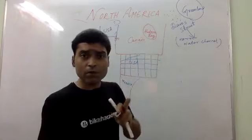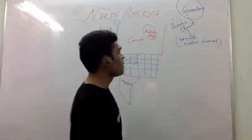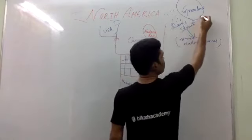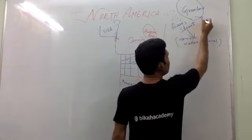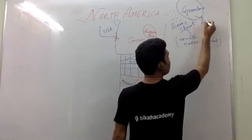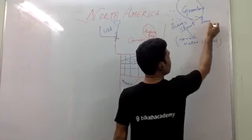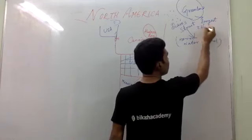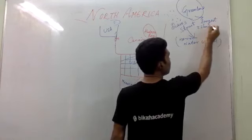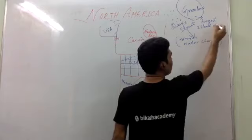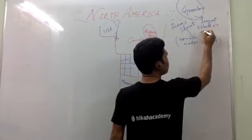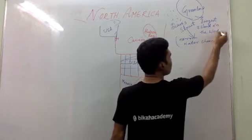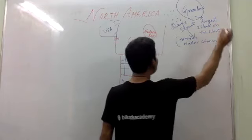So Davis Strait separates Greenland from Canada. A strait means a narrow water channel. And Greenland is the largest island in the world — this point you have to keep in mind.